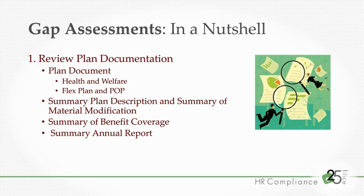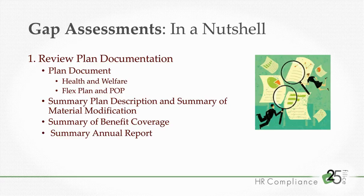You'll also want to ensure you have the summary of benefits coverage, or SBC, made available — a newer requirement under the Affordable Care Act. And then the summary annual report, or SAR. The SAR is required of plans that must file an annual Form 5500 report. If you're not required to file the 5500, you won't need to track down a summary annual report — it only applies to those who file the 5500.